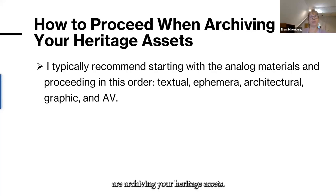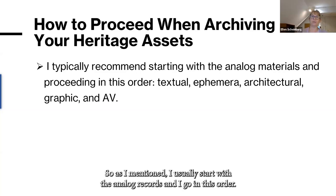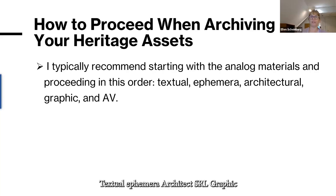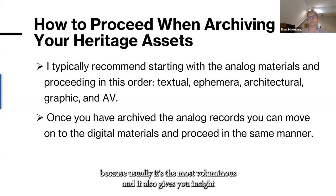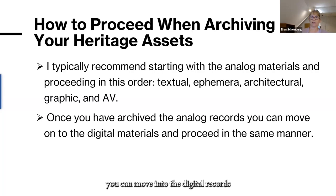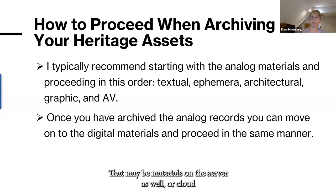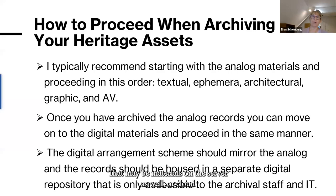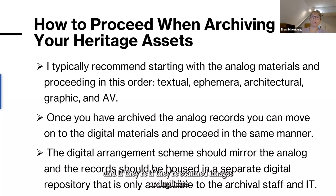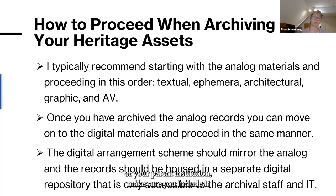When archiving your heritage assets, I usually start with analog records in this order: textual, ephemera, architectural, graphic, and AV. I like starting with the textual because it's usually the most voluminous and gives you insight into the other media and some context. Once you finish that, you can move into digital records — external drives you found, but maybe materials on the server or cloud as well. The digital arrangement should be similar to the analog, and it should be clear whether they're born digital or scans. Cross-reference everything, and when going through records on the server belonging to the client or parent institution, make sure you include all of that.